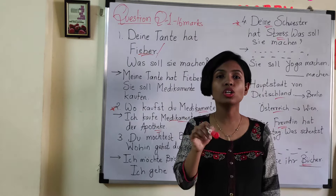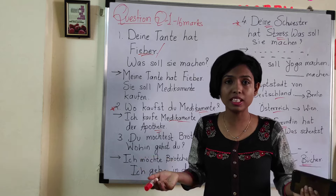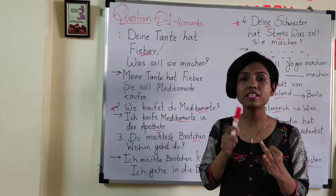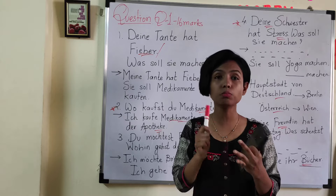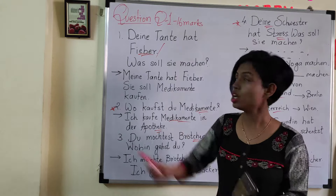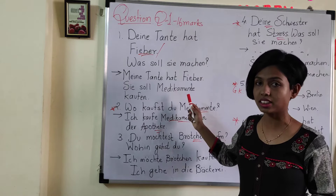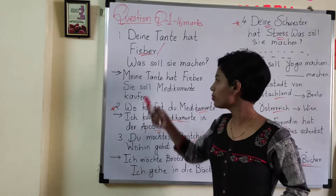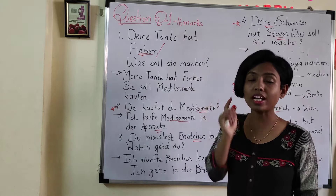For example, Deine Tante means your auntie, but in the question paper it might come as your uncle. So related feminine vocabulary: Tante — T-A-N-T-E — means auntie. Schwester means sister. Mutter is also feminine. This type of vocabulary can come which you need to write in your answer. So if the question says Deine Tante, in the answer it will be Meine Tante. Your auntie has fever, so in the answer you write: my auntie has fever. Meine Tante hat Fieber — for this line you have marks, so don't exclude it.